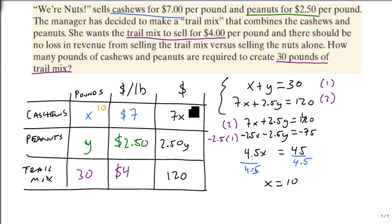And if it's 10 pounds of cashews, that means we're going to spend $70 if we were buying just the cashews part. Well, to get the trail mix, we just need to figure out what's left. And that's 30 minus 10 is 20.